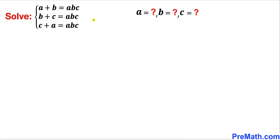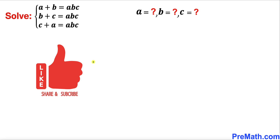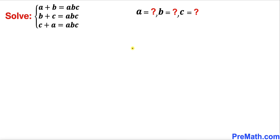Welcome to pre-math. In this video we have the system of equations: a plus b equals abc, b plus c equals abc, and c plus a equals abc. We are going to find the values of a, b, and c. Let's get started. We'll call the first equation number one, the second equation number two.